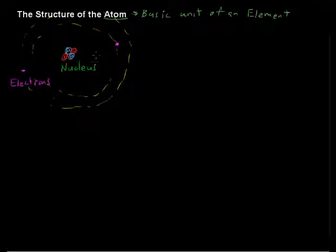Now the electrons are tiny compared to the proton and the neutron. But this space in between the nucleus and where the electrons reside is really big relative to the nucleus.